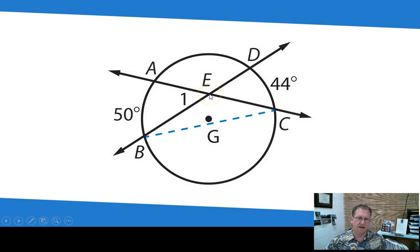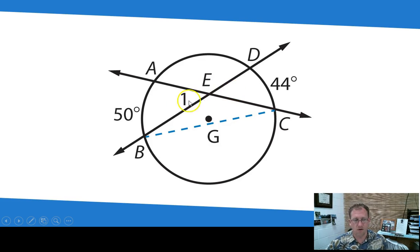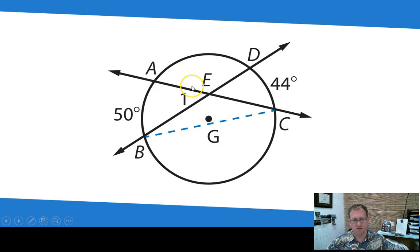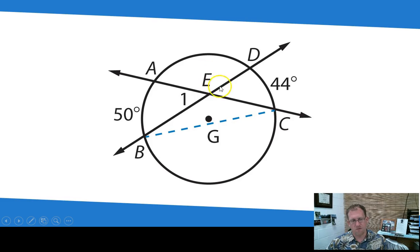Here's an example: a 44 degree arc and a 50 degree arc. Angle one is the same as its vertical angle pair. These two angles are not 50 and 44, but they are the average of 50 and 44. So 50 plus 44 is 94, and half of 94 is 47 degrees. So angle one and its vertical angle are each 47 degrees. You can then determine the other pair of angles because they are supplementary — so 180 minus 47 gives 133, and 136 degrees would be what's above and below this intersection.